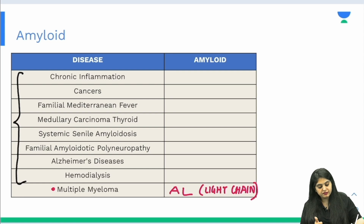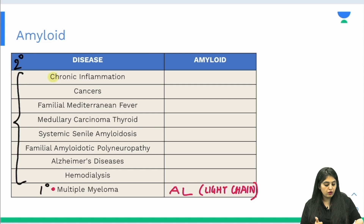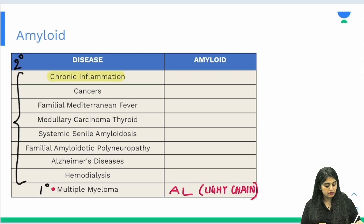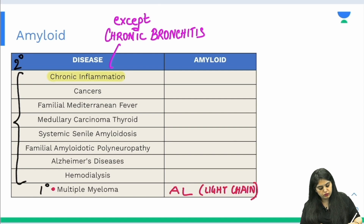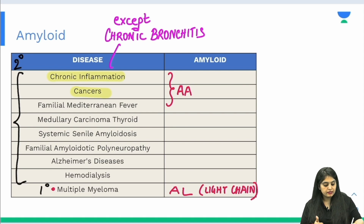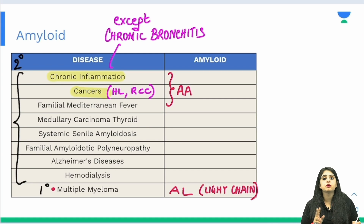All the other diseases fall under secondary amyloidosis. The first three categories are chronic inflammations, cancers, and familial Mediterranean fever. Any chronic inflammation — chronic pancreatitis, chronic appendicitis, chronic osteomyelitis — except chronic bronchitis, will show AA type of amyloid. For cancers, especially Hodgkin's lymphoma and renal cell carcinoma, the amyloid type is also AA.